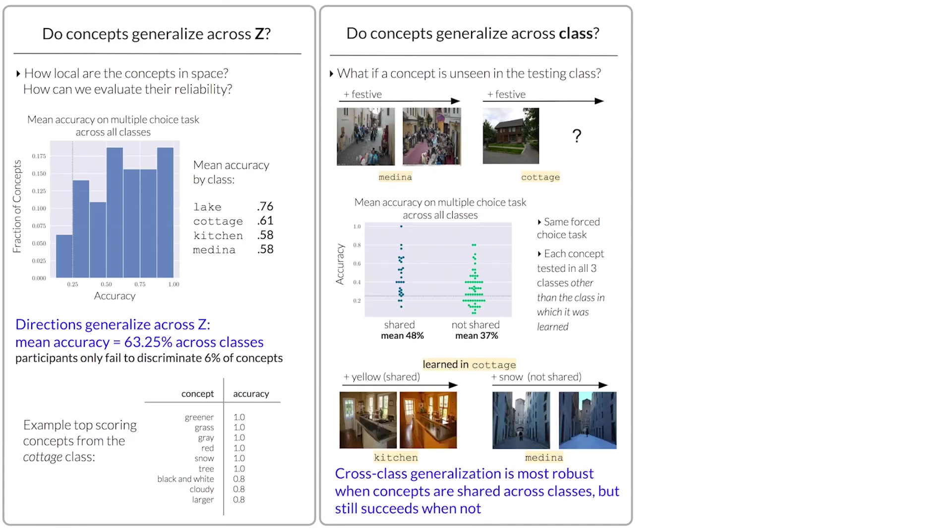Next, we find that subjects recognize concepts across image classes, more robustly when the concept initially appeared in both classes, but still successfully when it did not.